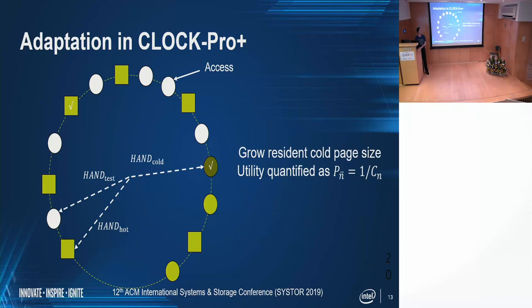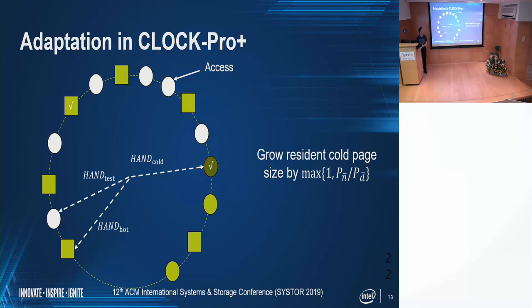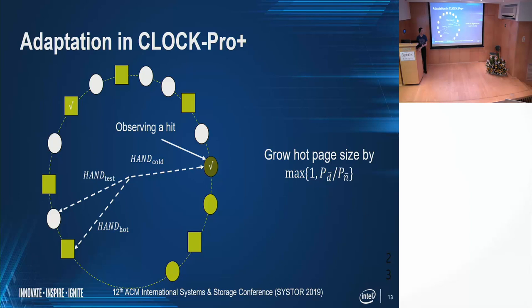When there is a miss on the non-resident cold page, growing the cold page size by one is likely to convert the miss into a hit; we calculate the probability as the utility. When there is a miss on the non-resident cold page, we need to grow the size of the resident cold page. We compare the two utilities to determine the exact size to grow — at minimum, by one. And when we observe a hit on a demoted page, we need to grow the hot page size; again, we compare the two utility values to determine the exact size to grow, at minimum by one.